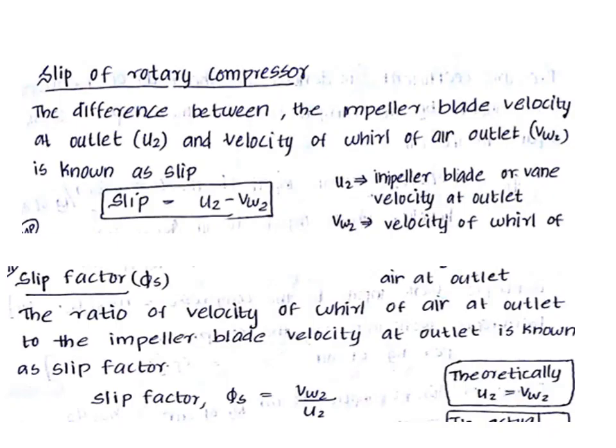We are learning about the centrifugal compressor. In this video, we have a numerical problem solving the centrifugal compressor. This is the slip of the centrifugal compressor. Slip is the difference between impeller blade velocity U2 and the whirl velocity at the outlet, VW2. Slip is equal to U2 minus VW2.